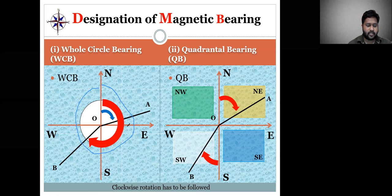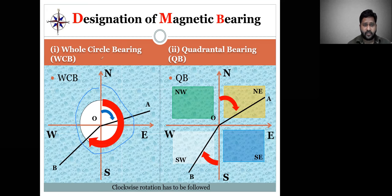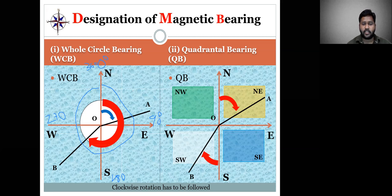In Whole-Circle Bearing, the bearings vary from 0 to 360 degrees. Starting from 0 degrees, going to 90 degrees, then 180 degrees, 270 degrees, and back to 360 degrees. We measure an angle with reference to these four cardinal points: 0, 90, 180, 270, and 360 degrees. The prismatic compass is graduated in this system.